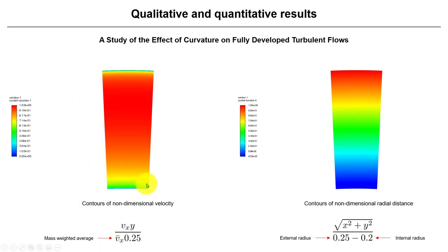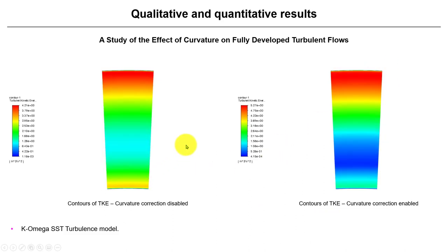And this is what we have the quantities. So we're normalizing the quantities. So here we have this custom function, non-dimensional velocity. And here we have non-dimensional radial distance, how it was computed. And what is interesting that here, in this case, we have curvature correction disabled and curvature correction enabled. And see the difference in the profiles.